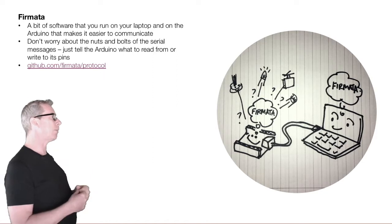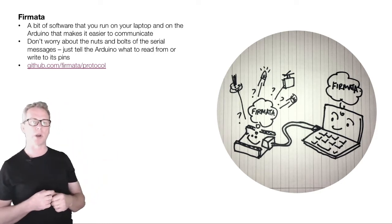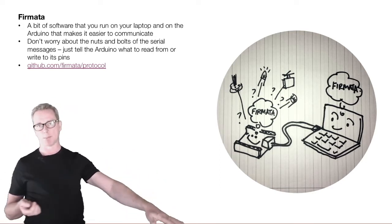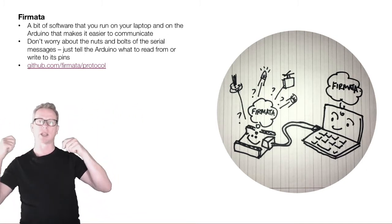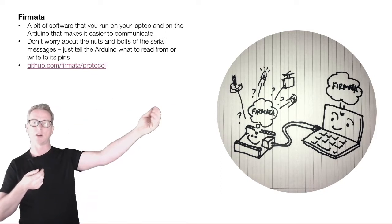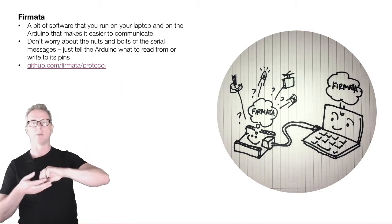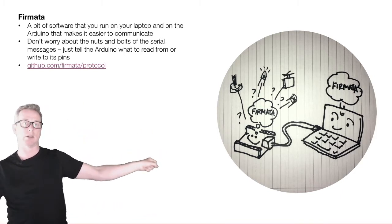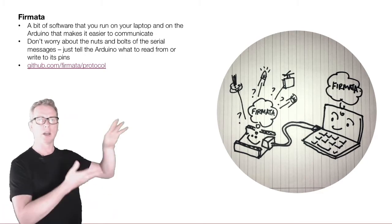Firmata is a bit of software that you run on your laptop and on the Arduino, and it makes it easier to communicate. It changes the way you approach the Arduino programming. Basically, once you use Firmata, your Arduino becomes kind of dumb — all it does is run the standard software and listen for connections or commands coming in, then just responds to those. The computer sends commands like: set the servo to this angle, set the RGB to this value, get me data from analog pin zero. The Arduino hears those commands, gets the data, and sends it back. The complexity of the programming moves to the computer.